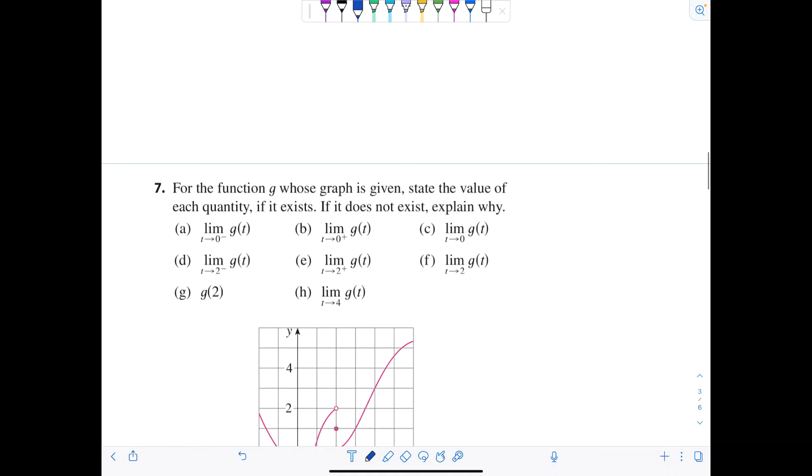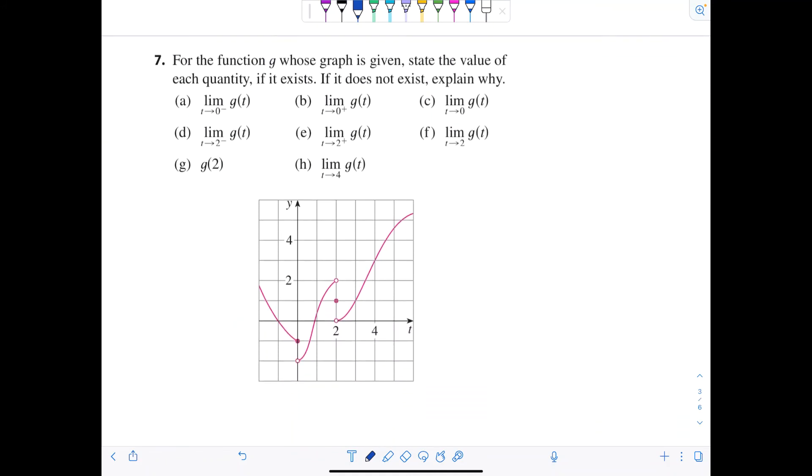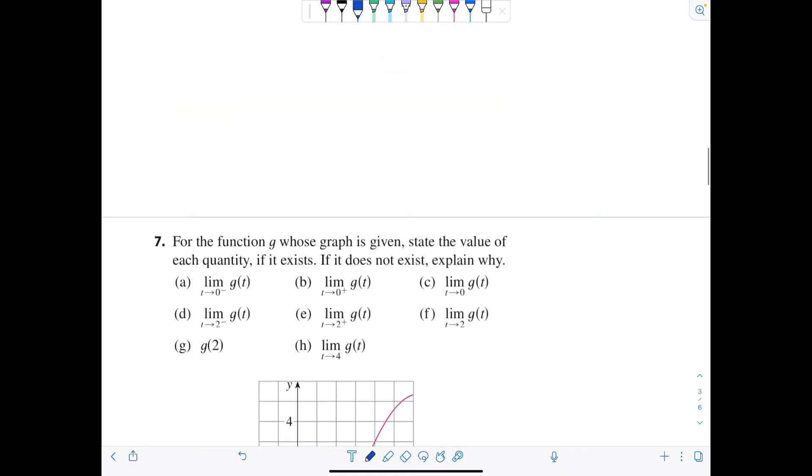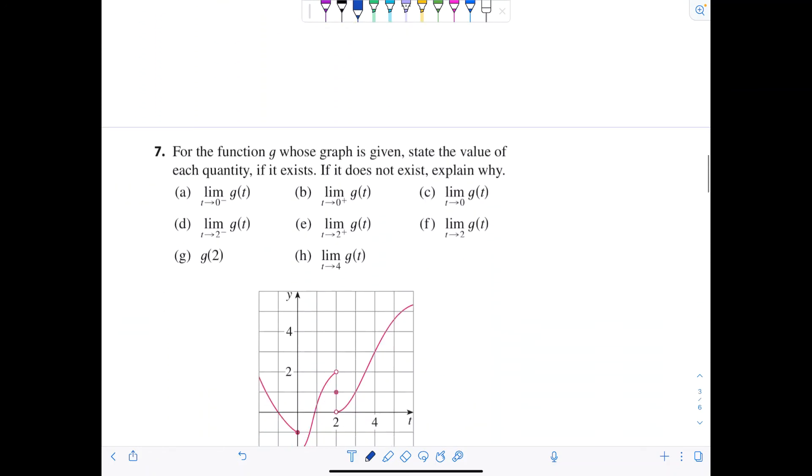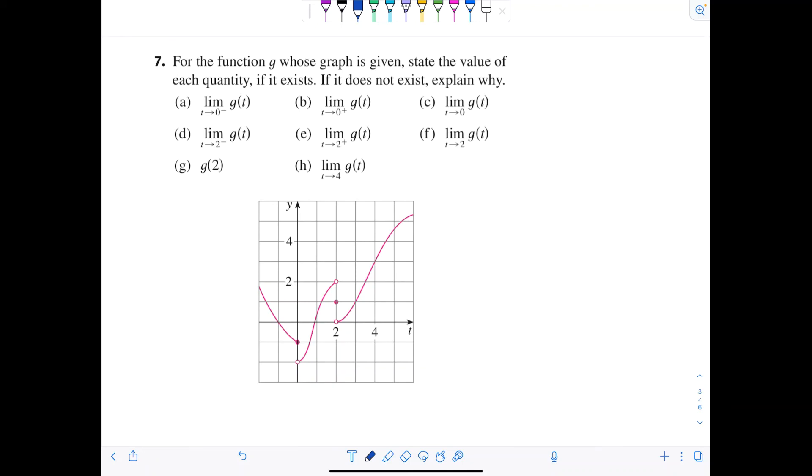Okay, let's try another. For the function g whose graph is given, state the value of each quantity if it exists. And then if it does not exist, explain why. Okay. Were we supposed to explain earlier for the last one? Let me check. Oh, explain why. Let me explain. You just go like this. The limit as x approaches 3 from the right of f of x does not equal the limit as x approaches 3 from the left. That's explaining. You know, if you're in my class, I'll tell you. Write out something mathematically. Don't write me a paragraph. When it says explain, you don't need to go into English class mode. Okay. All right, here we go.